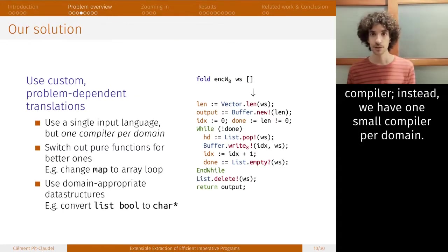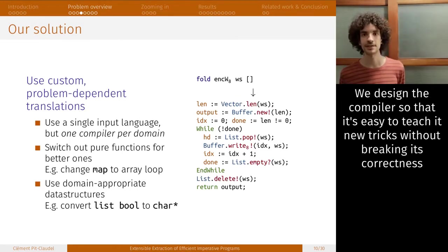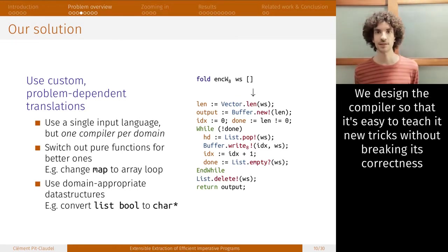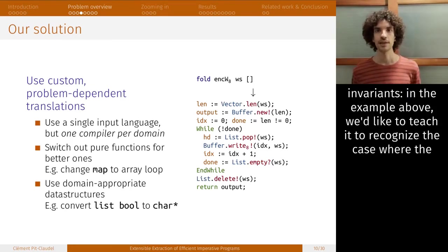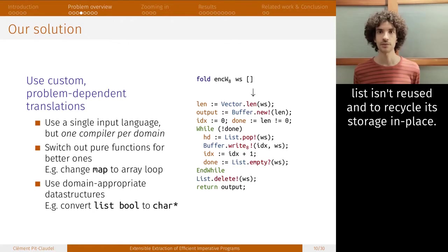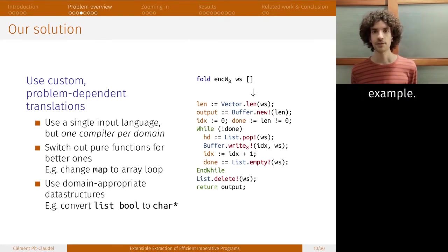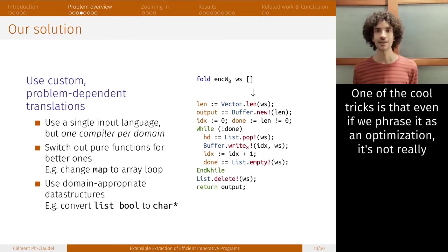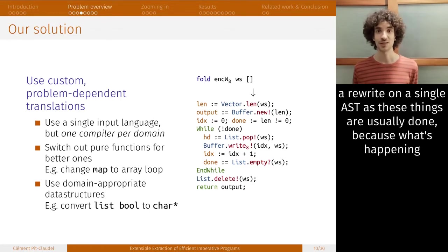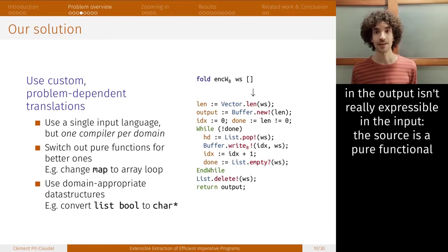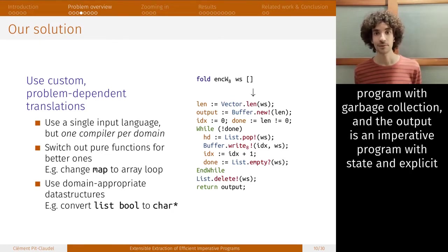The solution we offer to this problem is to ditch the idea of having just one canonical compiler. Instead, we have one small compiler per domain. We design the compiler so that it's easy to teach it new tricks without breaking its correctness invariants. In the example above, we'd like to teach it to recognize the case where the list isn't reused and to recycle its storage in place. We also teach it to not use a list at all and to put the data in an array instead. One of the cool tricks is that even if we phrase it as an optimization, it's not really a rewrite in a single AST, because what's happening in the output isn't really expressible at all in the input. The source is a pure functional programming language with garbage collection, and the output is an imperative program with state and explicit memory management.